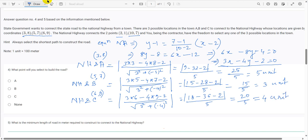So we can clearly see the distance between national highway and the point B is the minimum. This is the shortest distance. So you have to select point B to build the road.